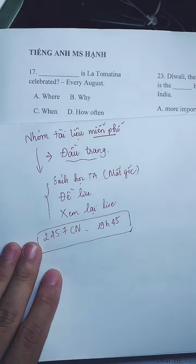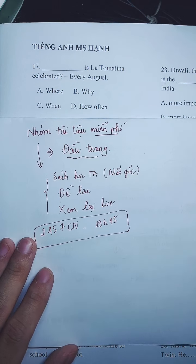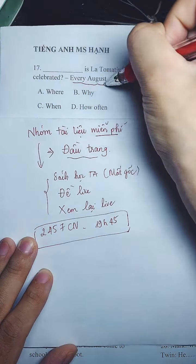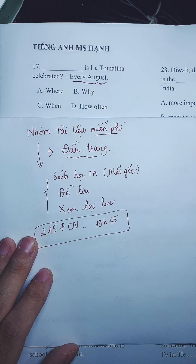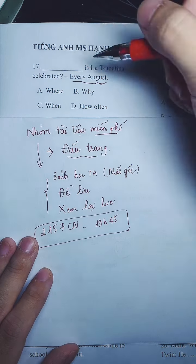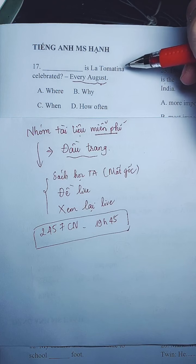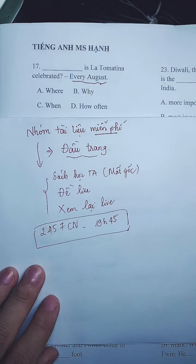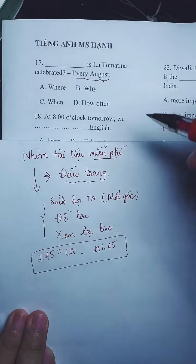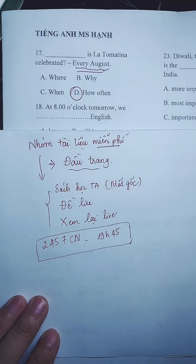Câu 17 — chọn từ để hỏi giống câu 12, nhưng người ta cho sẵn câu trả lời. Mình căn cứ vào câu trả lời để chọn từ để hỏi. Có phải là 'when' — hỏi khi nào — không? Câu trả lời có 'every August' — chỉ tần suất. Vào mỗi tháng 8 thì lễ hội này được tổ chức. Khi câu trả lời là 'in August' thì mới chọn 'when'. Còn 'every August' phải là 'how often'. Chỗ này hỏi tần suất, không phải hỏi khi nào.